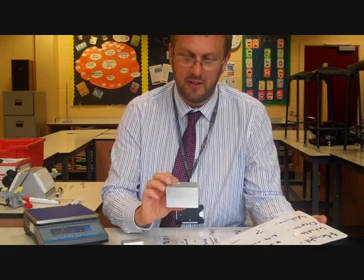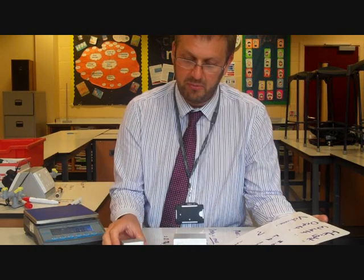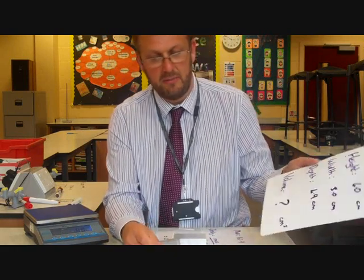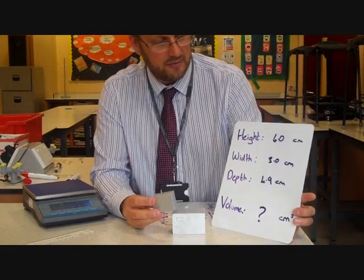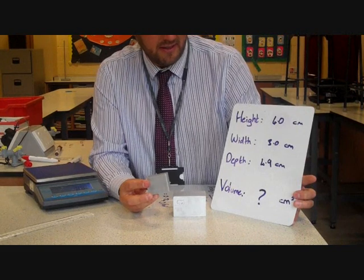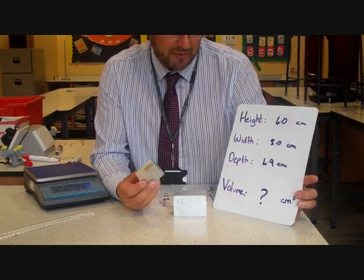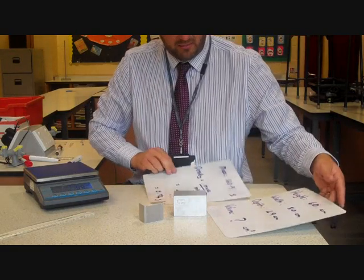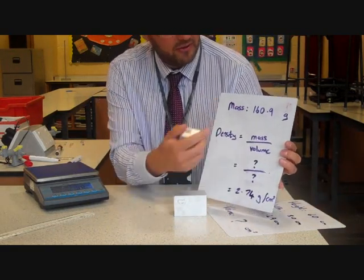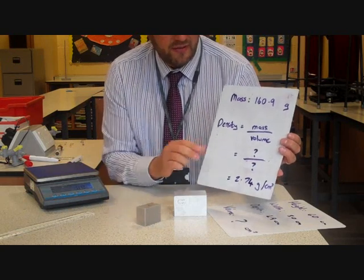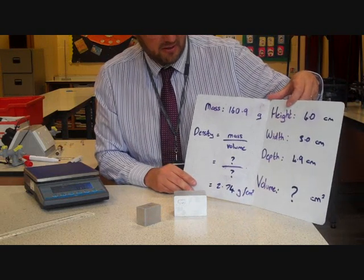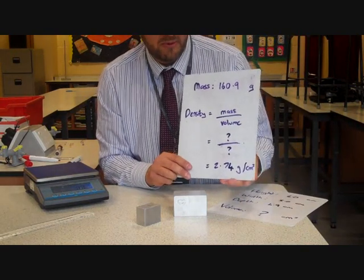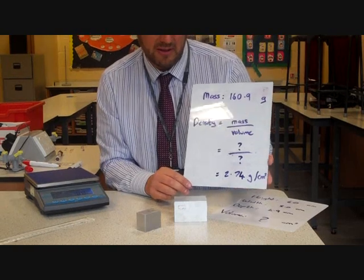We've worked out the density of the larger aluminium block. Now, just to prove the point, we can work out the density of the smaller aluminium block. The dimensions I've measured are: height 4 cm, width 3 cm, and depth 4.9 cm — so you can work out the volume yourself. The mass on the top pan balance is 160.9 grams. Doing mass divided by volume gives an answer of 2.74 grams per centimetre cubed, which is very similar to the previous answer within experimental error.